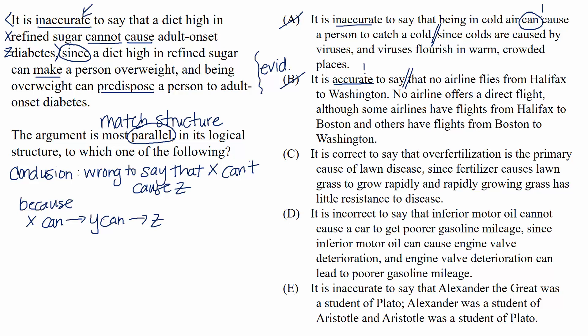For the record, though, the choice in its entirety reads, it is accurate to say that no airline flies from Halifax to Washington. No airline offers a direct flight, although some airlines have flights from Halifax to Boston and others have flights from Boston to Washington. Once again, we have way too many terms happening in this choice. And we only had three terms in our relationship from the passage.